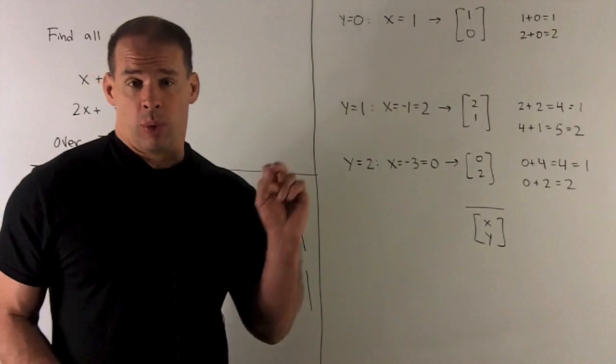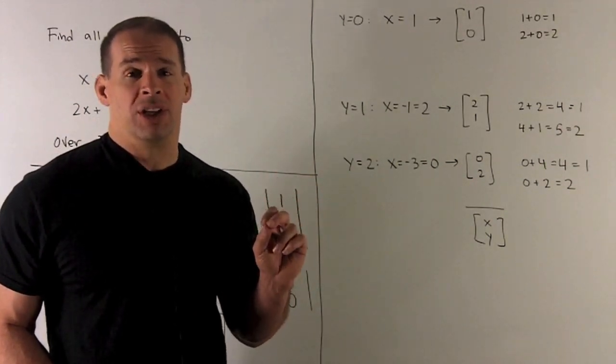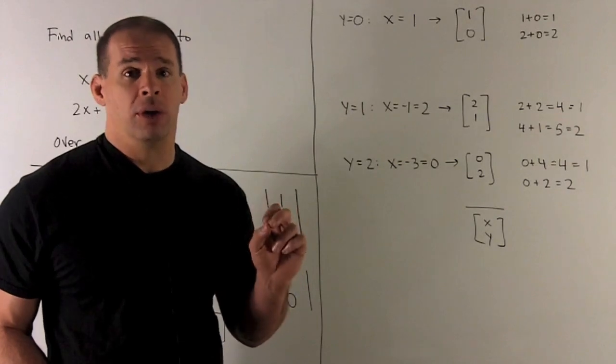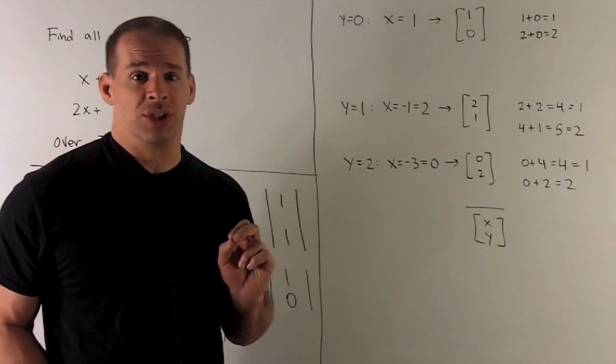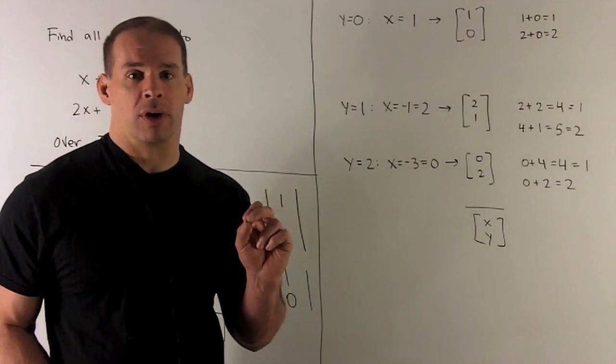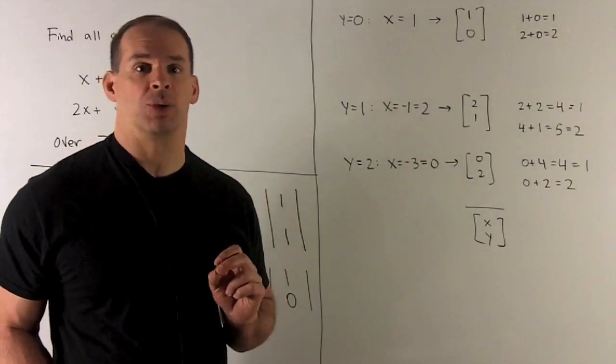And then once we have those, what we can do is just check by putting them into the original equations. And you'll note that each of these solutions is going to check out. So it's going to work exactly like it does when we're over a real or complex vector space.